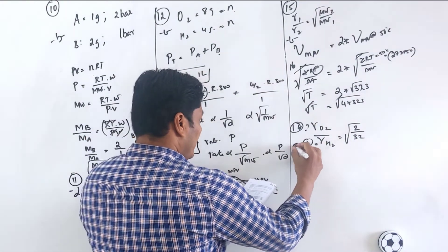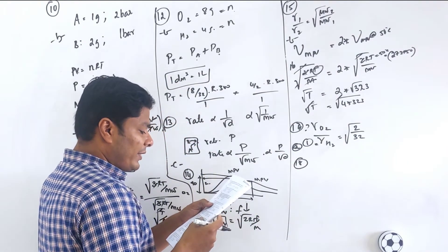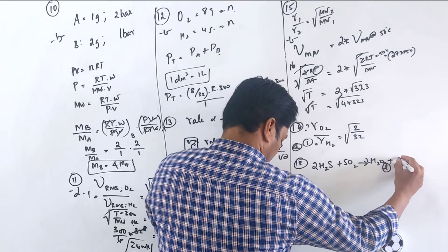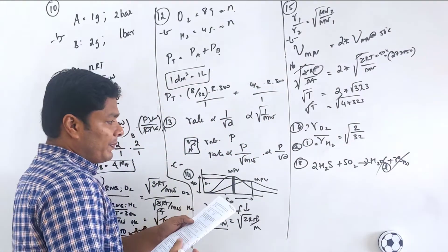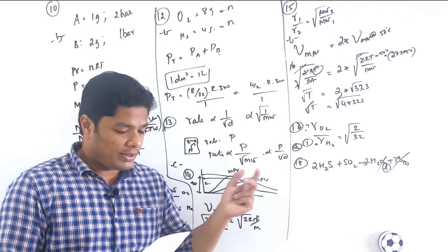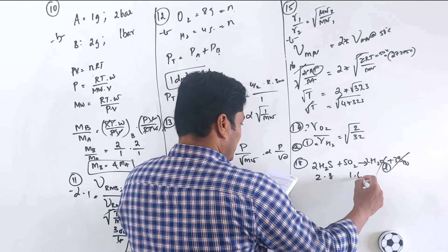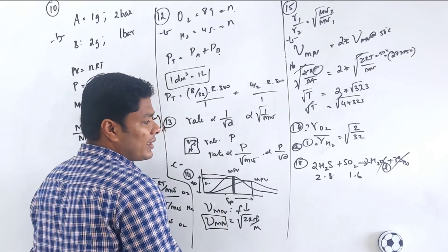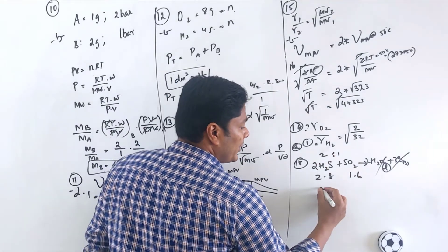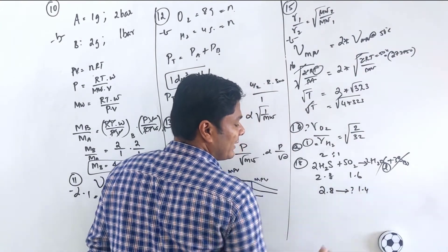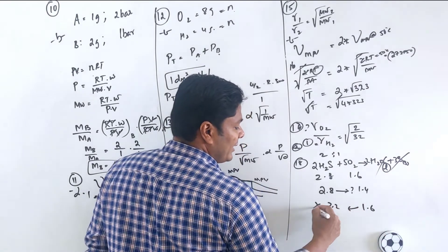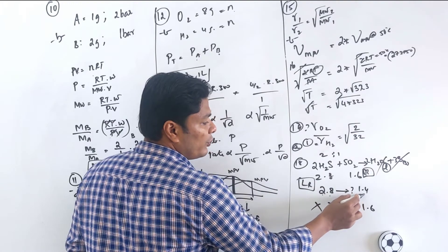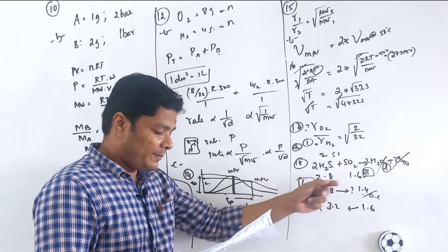Question 18: At STP, 2.8 liters of hydrogen sulfide mixed with 1.6 liters of SO2. The reaction ratio is 2:1 (H2S:SO2). For 2.8 L H2S, only 1.4 L SO2 is needed. SO2 is in excess: 1.6 - 1.4 = 0.2 L SO2 remaining. Option A.